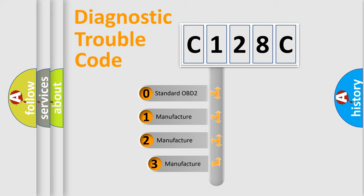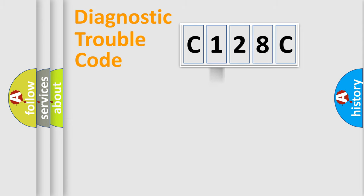If the second character is expressed as zero, it is a standardized error. In the case of numbers 1, 2, 3, it is a more prestigious expression of the car-specific error.